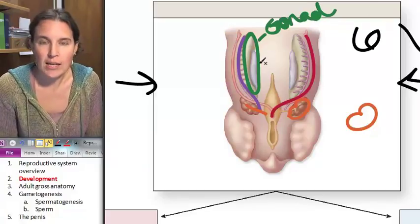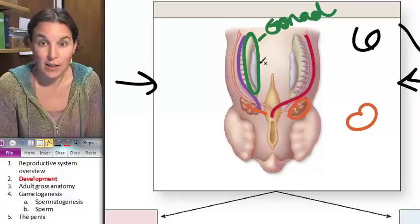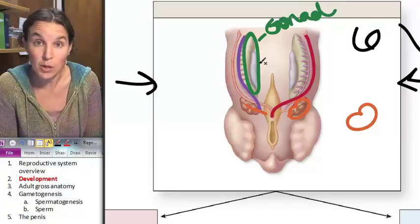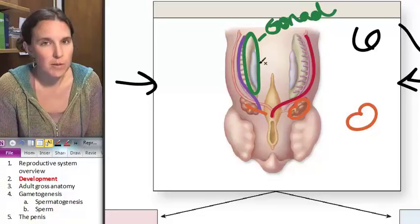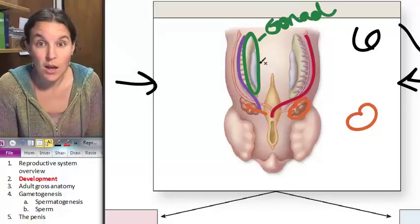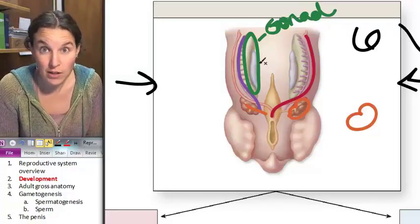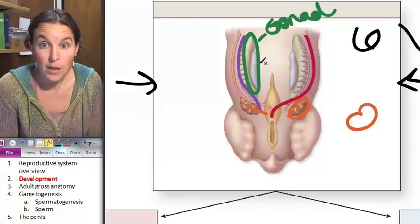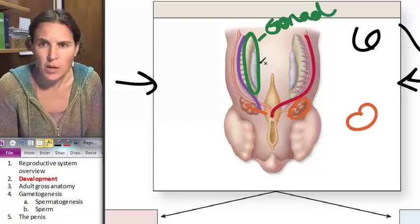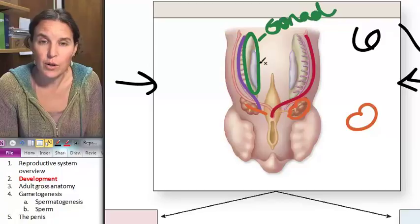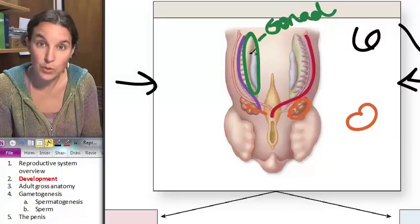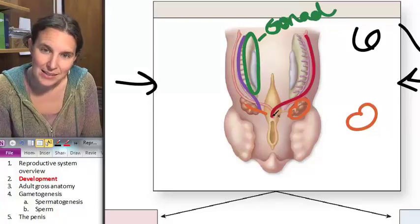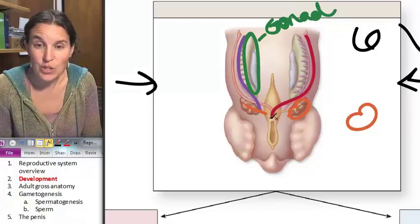This gonad is considered a bipotential gonad. It might turn into a sperm factory, which is a testy, or it might turn into an egg factory, which is an ovary. We don't know. It depends on what happens after six weeks in utero. So what I would like you to notice is that gonads produce sperm and eggs, and kidneys produce urine.